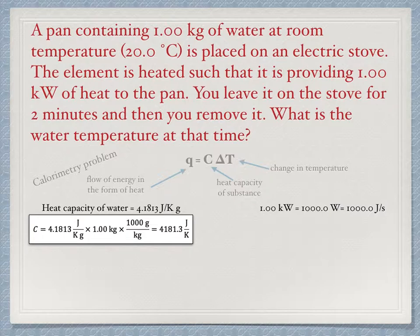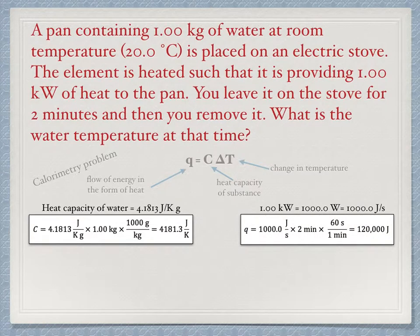Again, let the units guide what we need to do. If you are careful to write them out, you will see that since a watt is in units of per second, we need to convert the time in minutes into seconds. Expand the calculation and find that Q, the heat transferred in two minutes at this rate of 1 kilowatt, must be 120,000 joules.